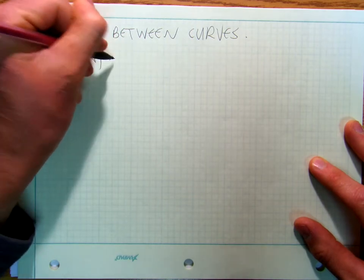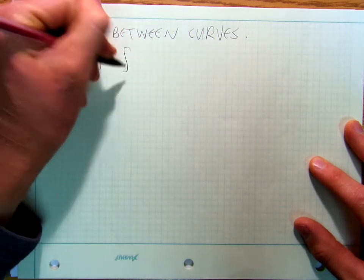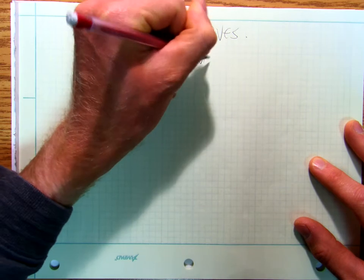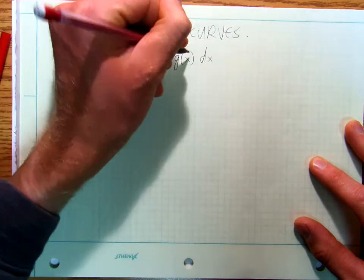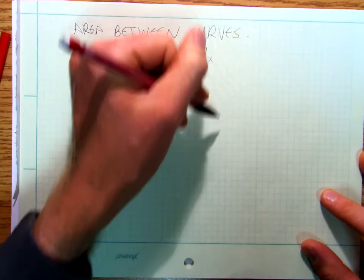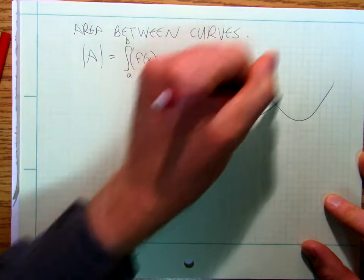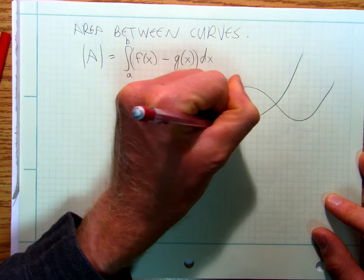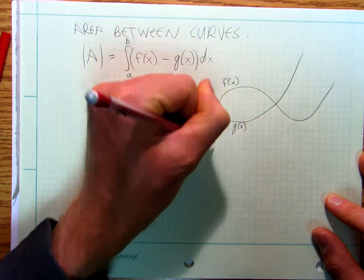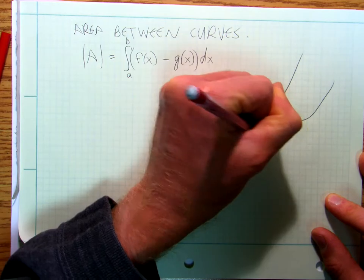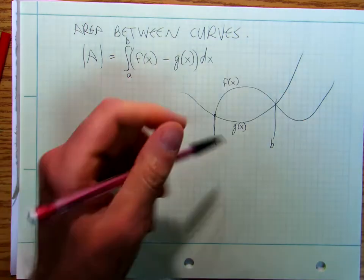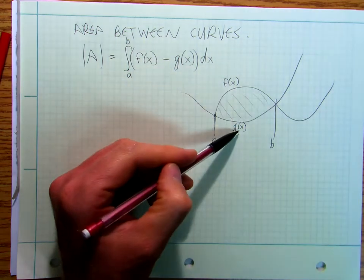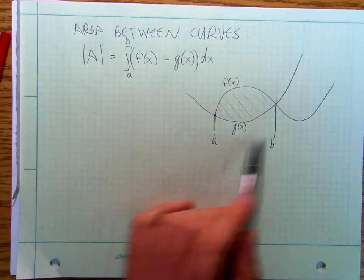In general, area is going to be the absolute value of the integral of f of x minus g of x dx from a to b. So I've got some curve f of x and another curve g of x, with bounds a and b. I take f of x minus g of x, integrate that from a to b, and I find that area.